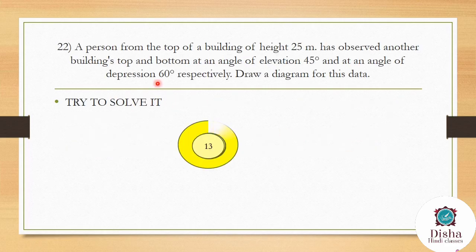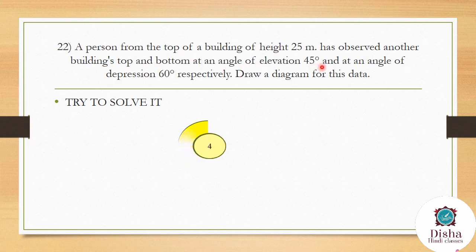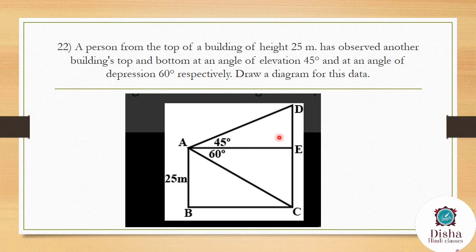A person from the top of a building of height 25 meters observes the top and bottom of another building at an angle of elevation of 45° and an angle of depression of 60° respectively. Draw a diagram for this data. The diagram shows the person standing at the top of the first building, looking up at 45° toward the top (D) of the other building and down at 60° toward its bottom (C).